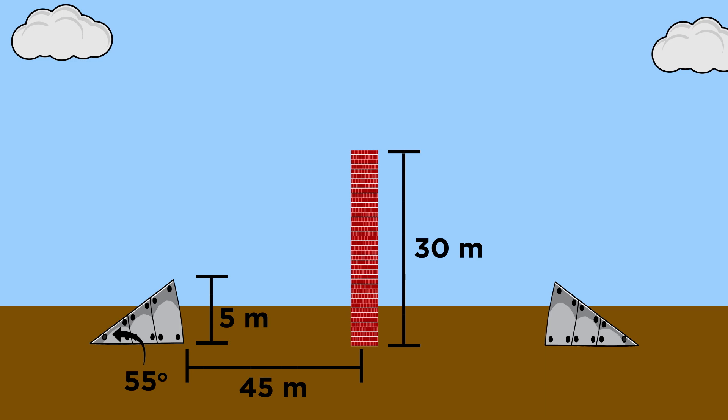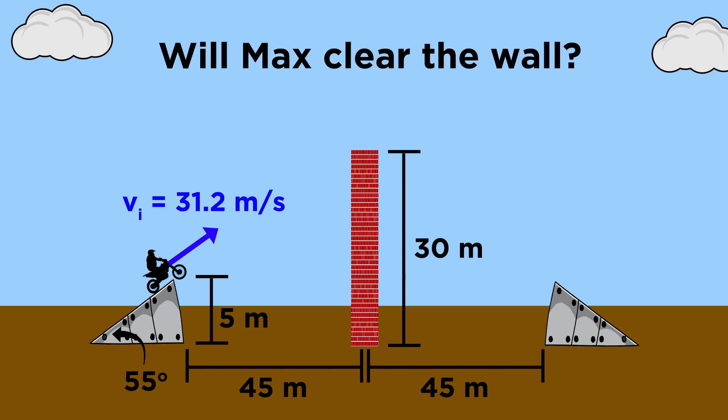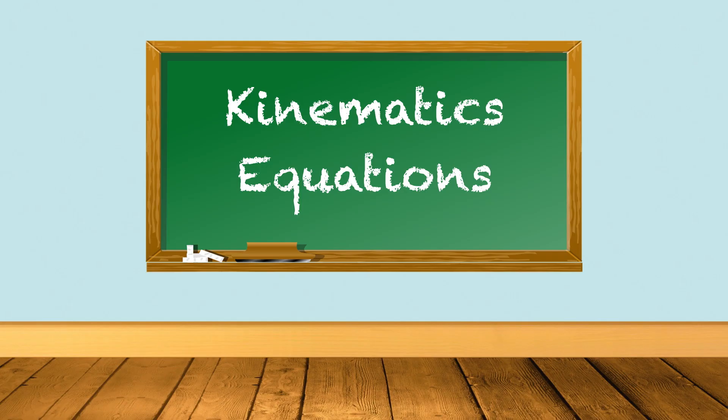If the wall is forty-five meters away from the edge of the takeoff ramp, and forty-five meters away from the edge of a landing ramp on the other side with identical dimensions, and Max leaves the ramp with a velocity of thirty-one point two meters per second, will he clear the wall and land safely on the other side? To answer this, we will certainly need to use some equations from our study of kinematics.